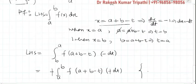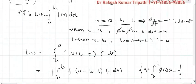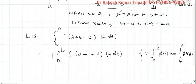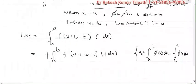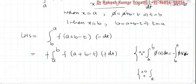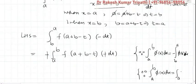Here we have used the property: integral from a to b of φ(x) dx = −integral from b to a of φ(x) dx, meaning when we interchange the limits a negative sign appears. Also, we know that integral from a to b of φ(x) dx = integral from a to b of φ(t) dt, meaning definite integrals are independent of the variable of integration.